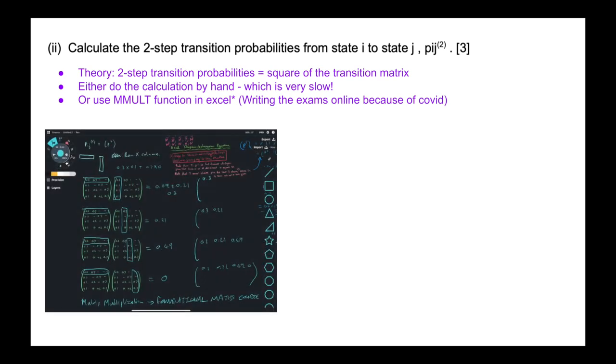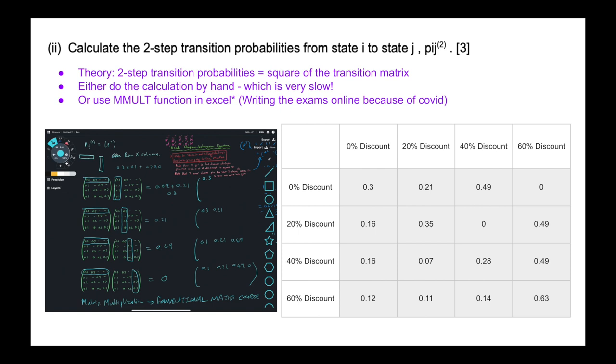So we either need to do the calculation by hand, which is very slow. It's what I had to do back in my day, or you can now use Excel because a lot of these exams are being written online because of COVID. And you can see like back in my day, you had to do some matrix multiplication and rely on your foundational maths and it's very messy where when it comes to Excel, you use a function called MMULT, which stands for matrix multiplication, and it spits this out for you instantly. So it's like three marks that you can get instantly. And we will go through how to do all the Excel things at the end of this video.